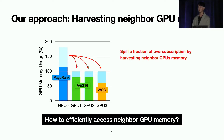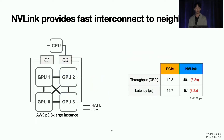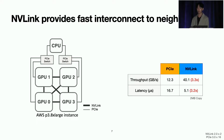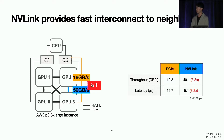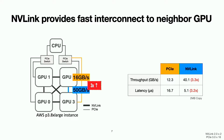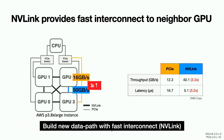Modern GPU servers provide NVLink as a fast interconnect to facilitate our memory harvesting technique. NVLink is a high-speed interconnect supporting GPU-to-GPU communication to transmit data without using the expensive PCIe interconnect. In this AWS instance, the bandwidth of PCIe is 16 GB/s and the bandwidth of NVLink is 50 GB/s, which is three times higher than PCIe. We also measured actual throughput and latency — NVLink is about three times better than PCIe on both, giving us an attractive opportunity to build a new data path.